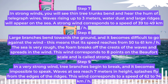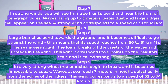Step 9. In a very strong wind, tree branches begin to break and it becomes impossible to speak. Waves at sea reach 7 m in height, and splashes fly from the edges of the ridges. This wind corresponds to a speed of 62 to 74 km/h.